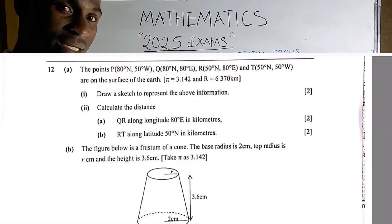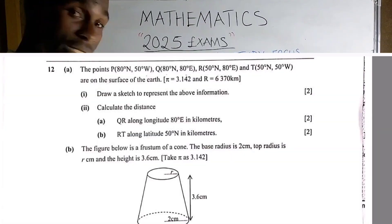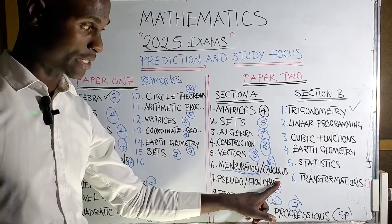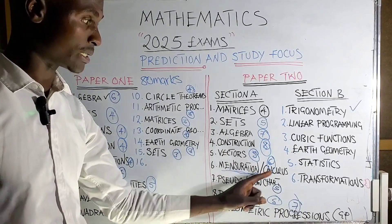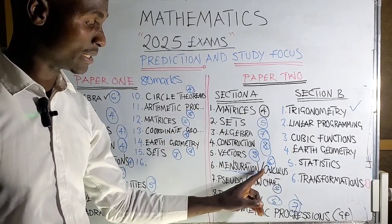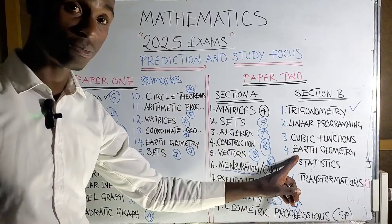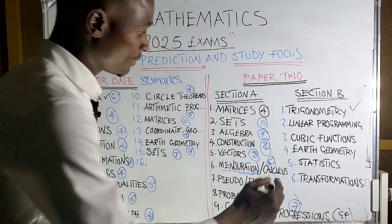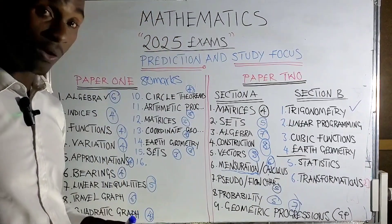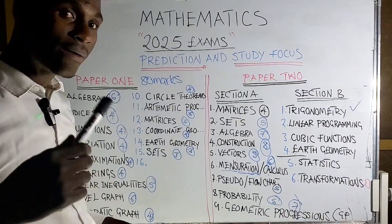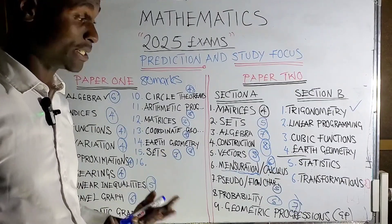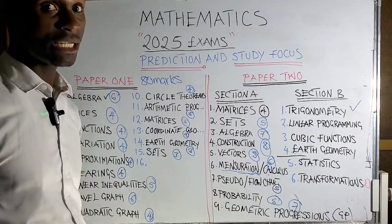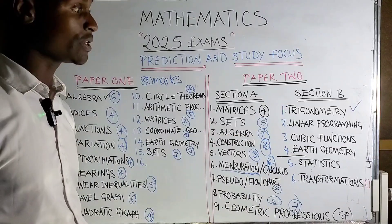Earth geometry is six marks. Remember what I said — in section A it may come paired with either mensuration or a calculus question to make it 12 marks in total. So mensuration is six marks and earth geometry is six marks — add one of these together and you get 12 marks. You should master at least four section B questions, ideally five, since things can change and statistics or other questions may be tricky.